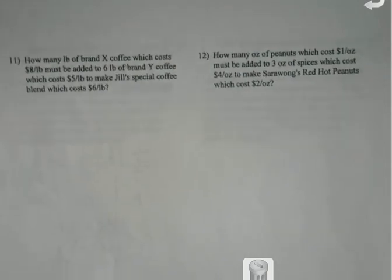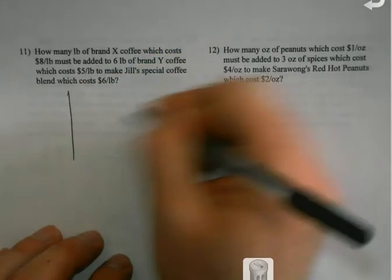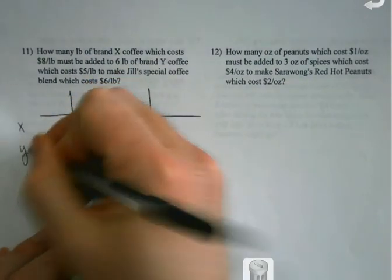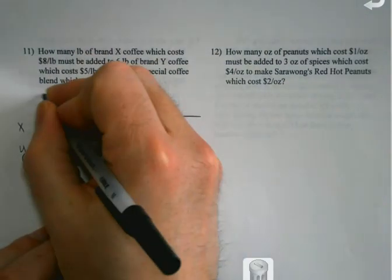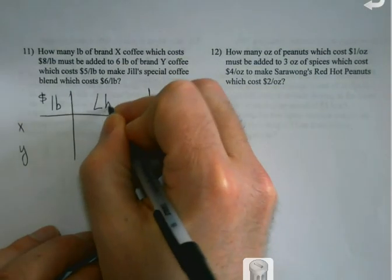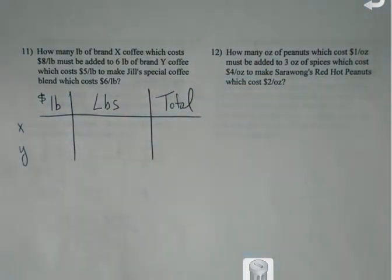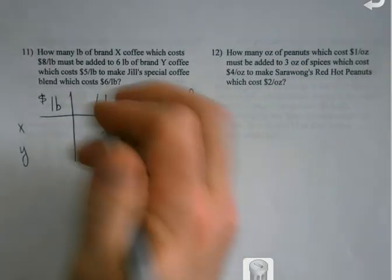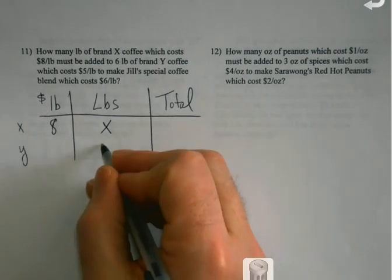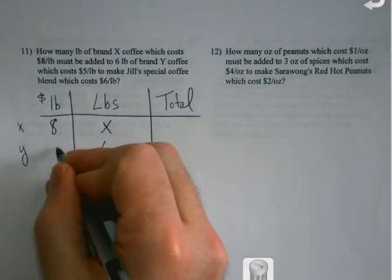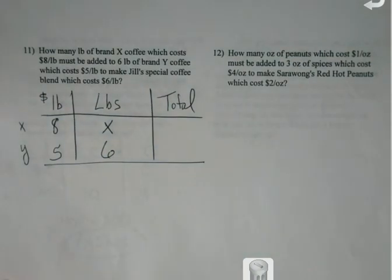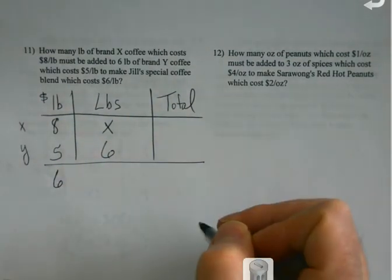So we got brand X coffee and brand Y coffee. And we know how much it costs per pound. We know how many pounds. So that would give me a total. And you can use your own labels for these. I just look at things and go, okay, what pieces do I have so I can figure out where to put everything? How many pounds of brand X coffee which costs $8 a pound must be added to 6 pounds of brand Y coffee which costs $5 per pound to make Jill's special coffee blend which costs $6 per pound. Okay.